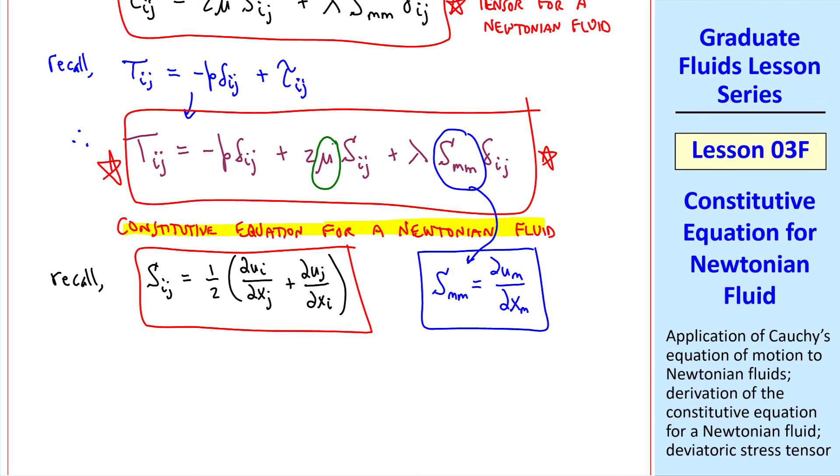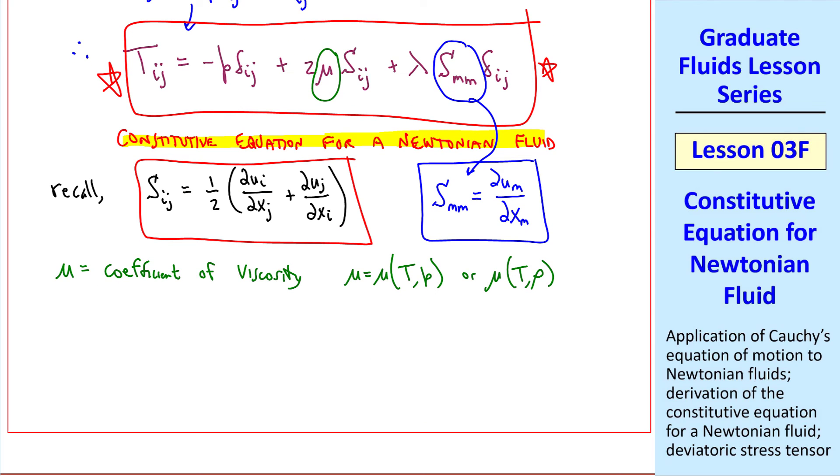This coefficient, mu, is the coefficient of viscosity, in general a function of temperature and pressure, or of temperature and density. Any two thermodynamic properties are sufficient to give mu. But what is lambda, this coefficient? Lambda is called the second coefficient of viscosity, also a thermodynamic variable or property. Mu is well known in undergraduate fluid mechanics, but lambda is rarely even mentioned.